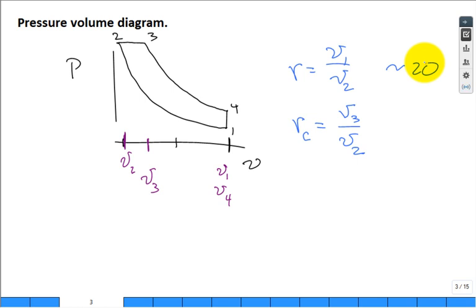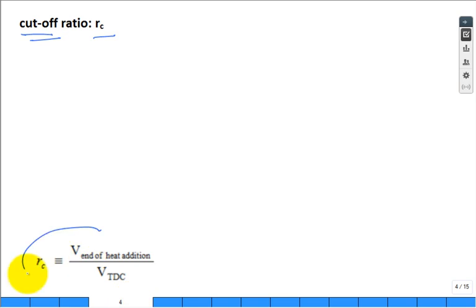It's not like the cutoff is six or eight, it's not that big. So that's the volume at the end of the heat addition - that's volume state three divided by the smallest volume at top dead center, volume at state two.